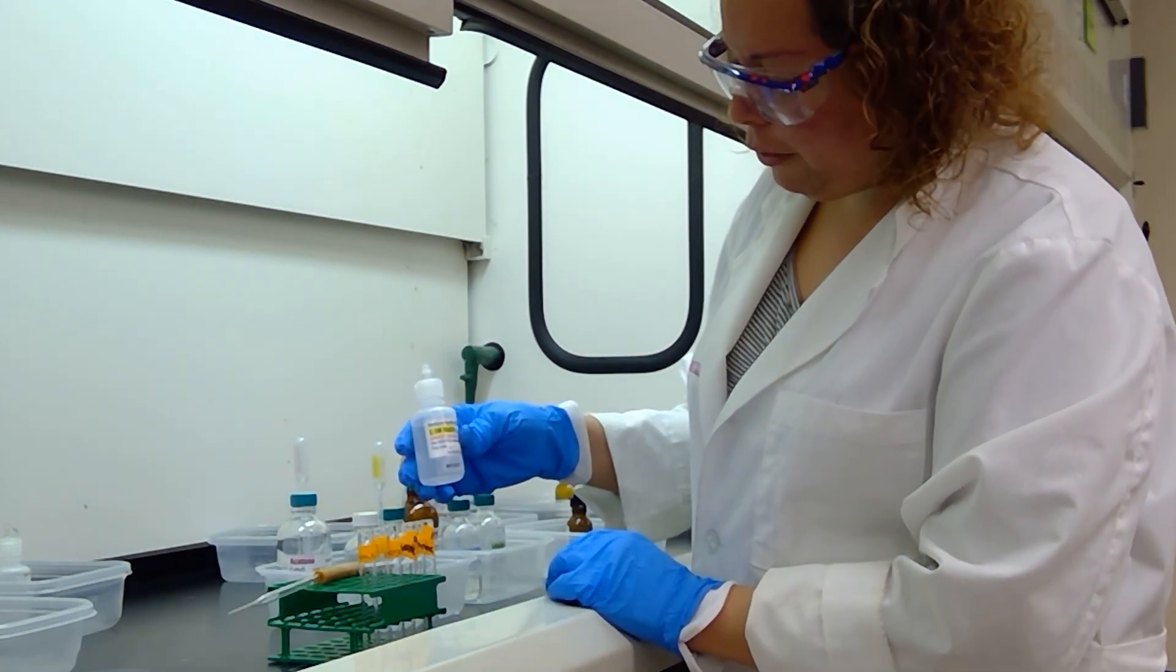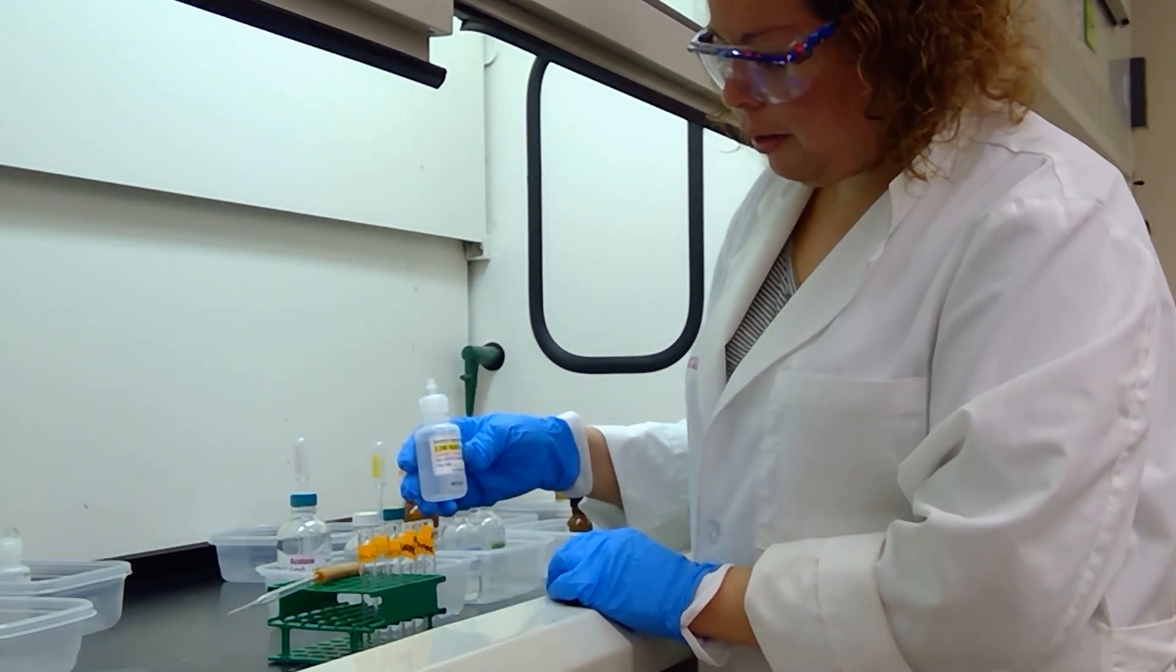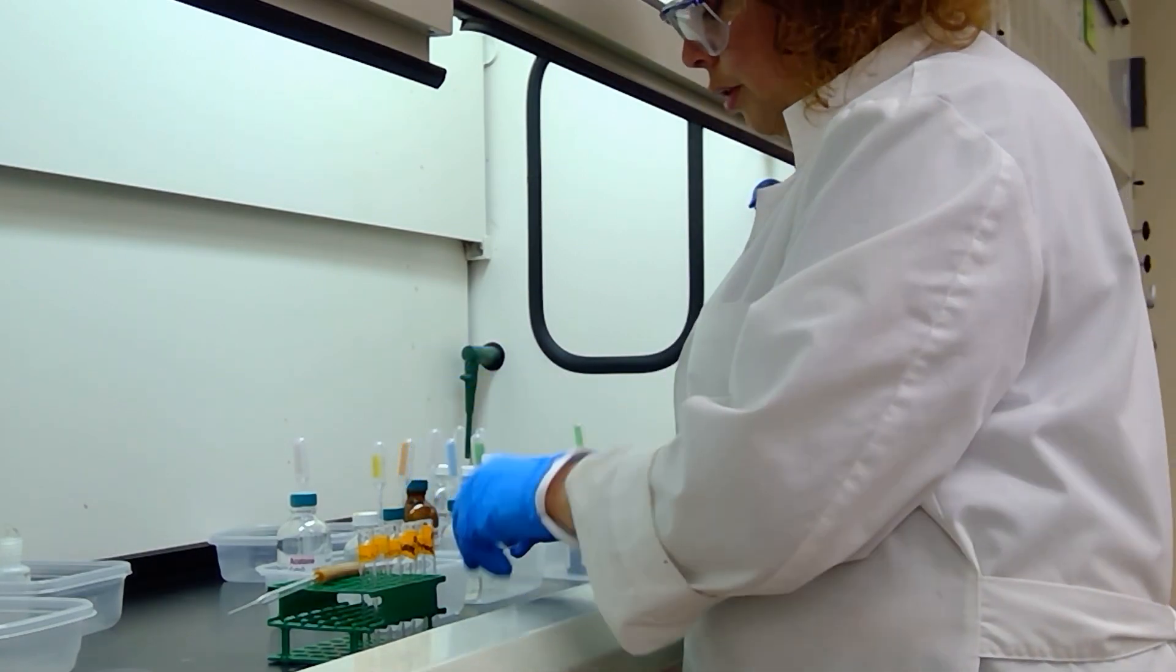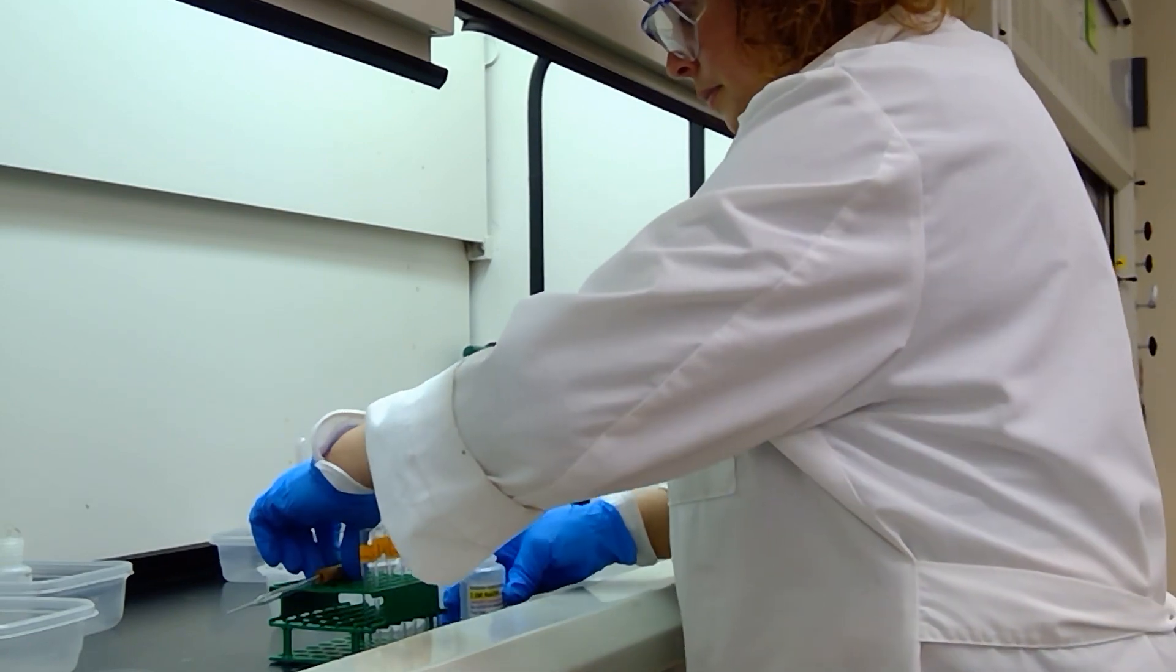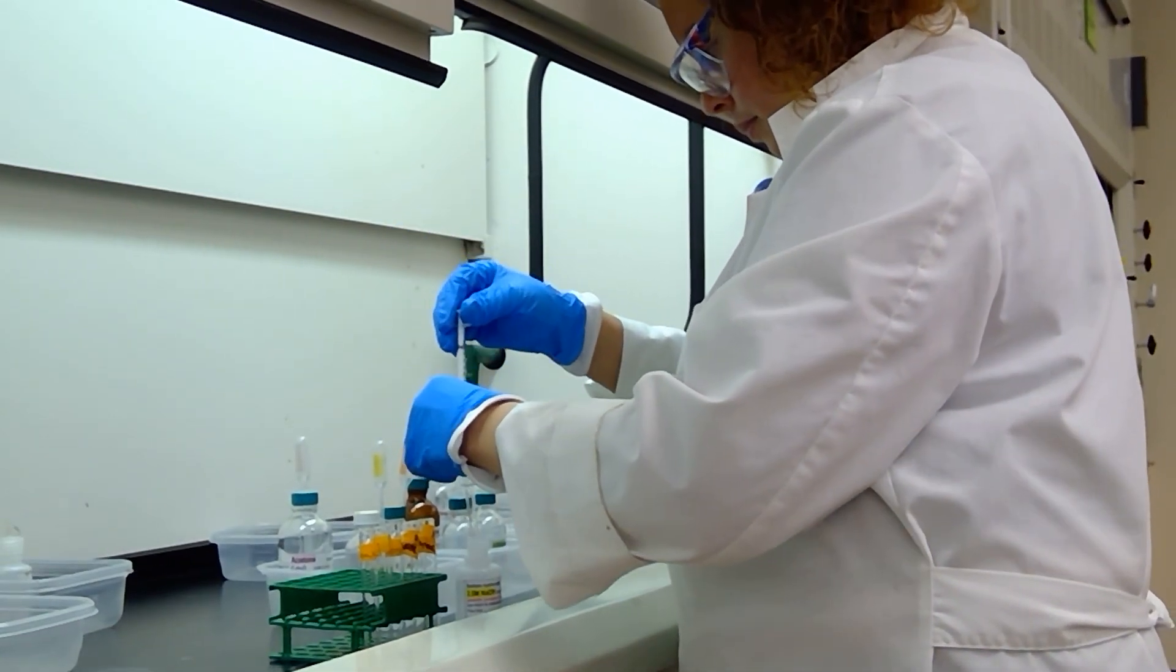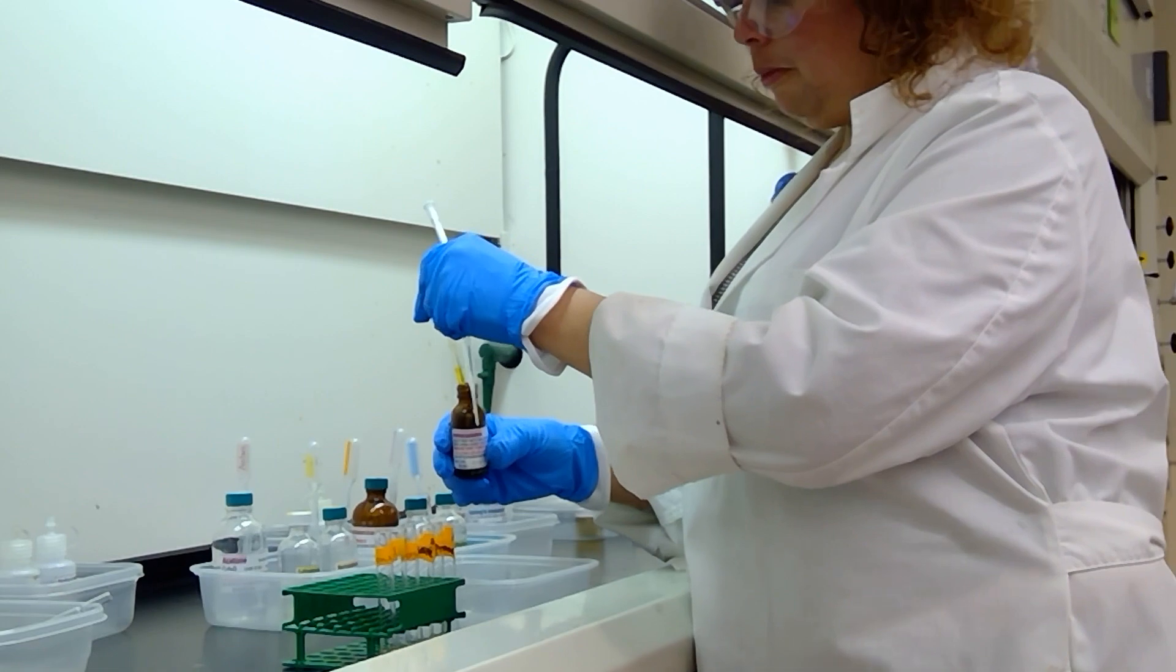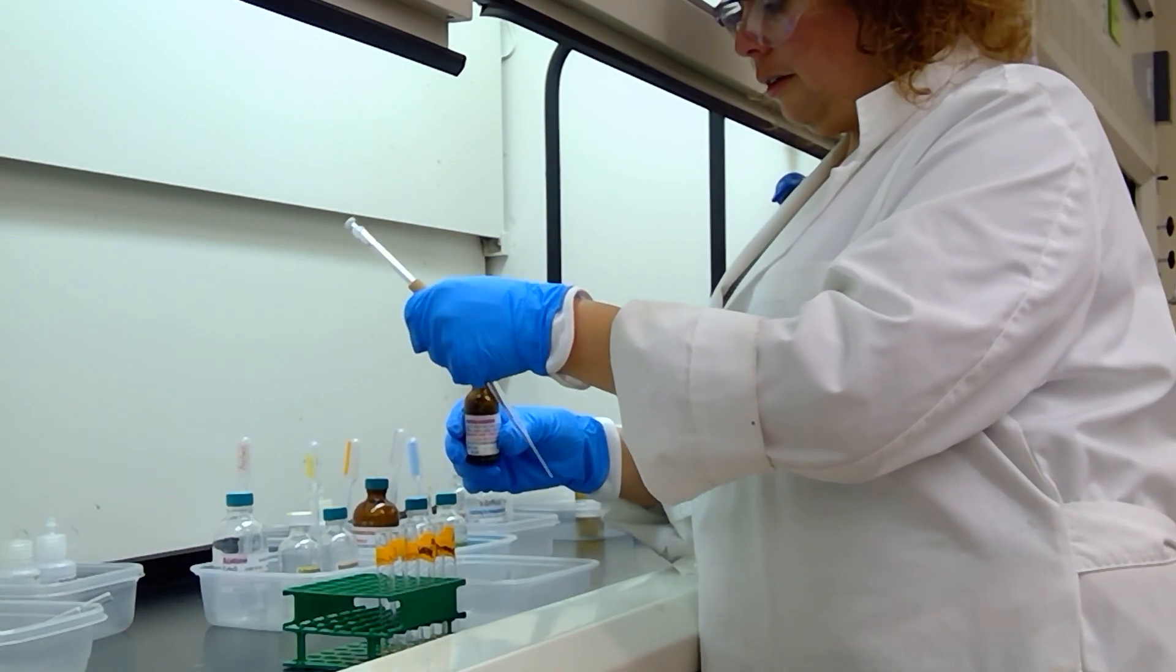Next up we are going to add 2.5 molar sodium hydroxide, this is the same as 10% sodium hydroxide, and for each of these samples we are going to add half a milliliter. I'm going to not dip this back in there because I don't want to leak out iodine solution.